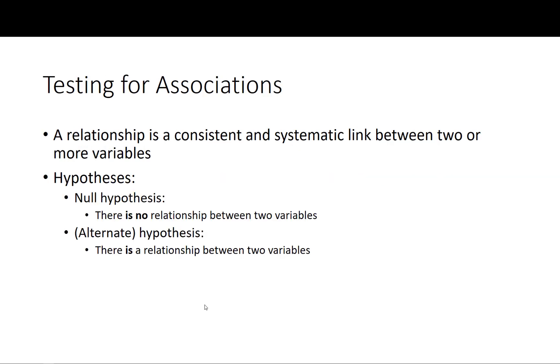Testing for associations: a relationship is a consistent and systematic link between two or more variables. When describing relationships, we are dealing with variables that are not necessarily causative in their relationship, so X the independent variable is not causing the Y but they might be correlated to each other. The null hypothesis is that there is no relationship between two variables and the alternative hypothesis is that there is a relationship between two variables.